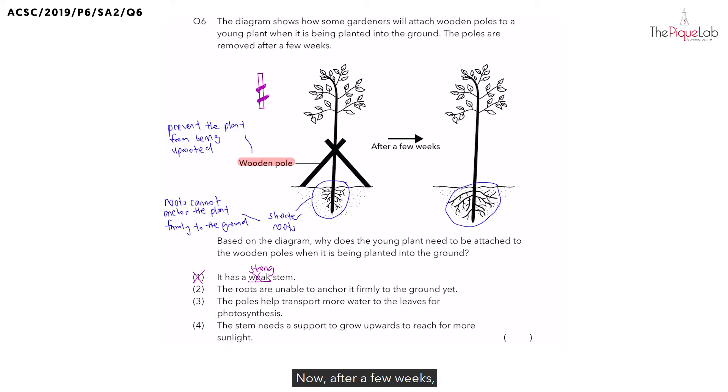After a few weeks, why are we then able to remove the wooden poles? Let's take a look at the roots of the plant now. We can see that they have longer roots. When the plant has longer roots, do you think that the roots are now able to anchor the plant firmly to the ground? Yes, longer roots means that the plant can be anchored firmly to the ground.